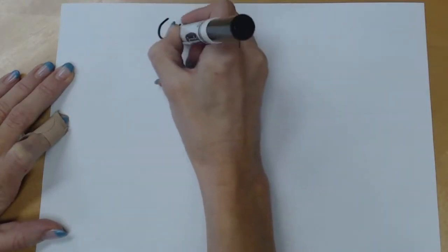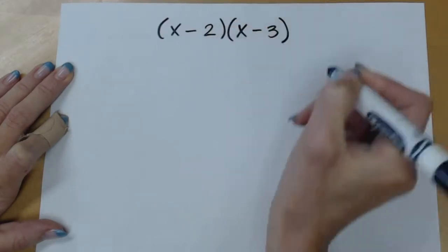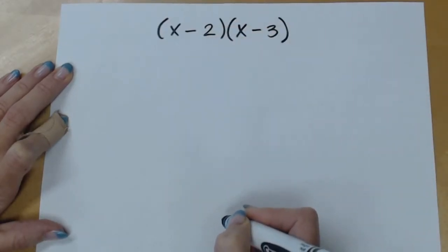So for example let's say we want to multiply x minus 2 times x minus 3 and we want to illustrate it using the area model.